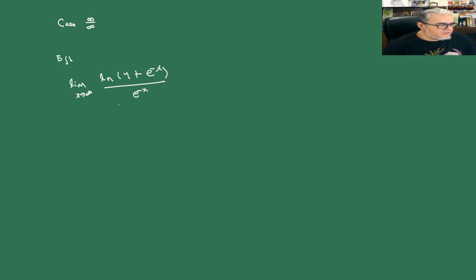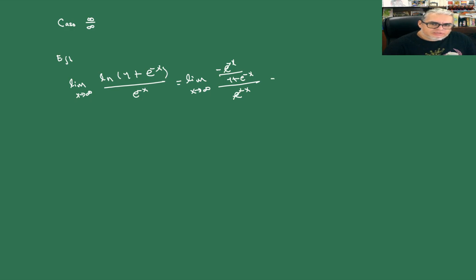El logaritmo de 1 también es cero, y básicamente es lo mismo que ya hemos estado haciendo. Este es el límite cuando x tiende a infinito; derivamos en los dos casos y tenemos menos e a la menos x por 1 sobre (1 más e a la menos x) sobre e a la menos x. La e a la menos x se va a ir a cero cuando x tiende a infinito y nos queda simplemente 1.